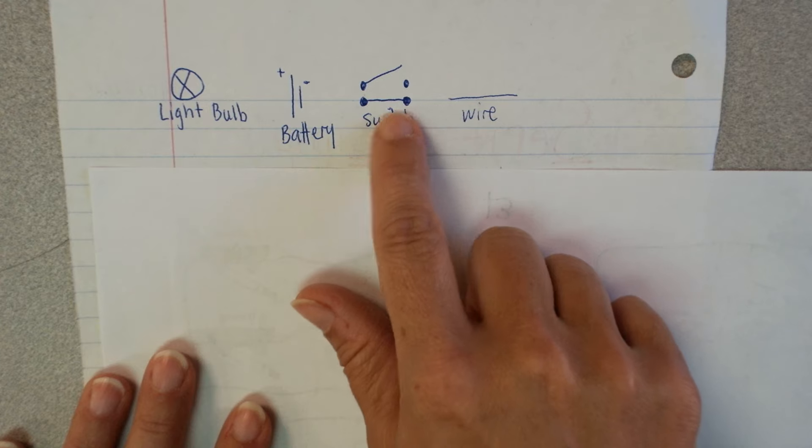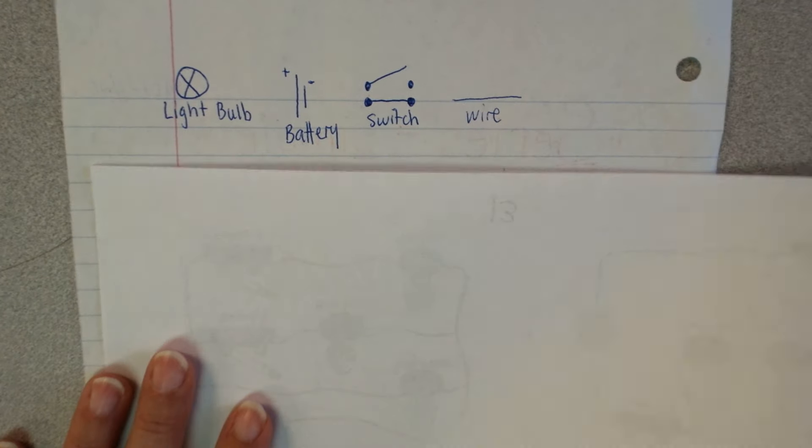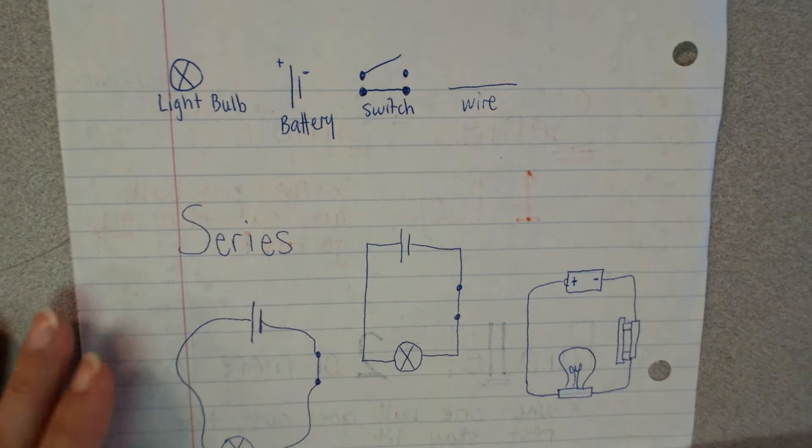I'll show you an example in just a second of that also. These are going to be our switches. So just usually two dots with a closed switch would be your line connecting, or an open switch if they're not connecting, and then our wire. So let me show you some examples here.